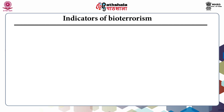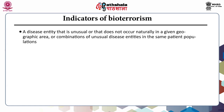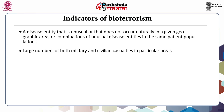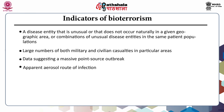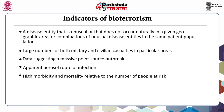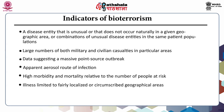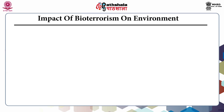Indicators of bioterrorism include: a disease entity that is unusual or does not occur naturally in a given geographic area, or unusual combinations of disease entities in the same patient population; large numbers of both military and civilian casualties in particular areas; data suggesting a massive point-source outbreak; apparent aerosol route of infection; high morbidity and mortality relative to the number of people at risk; illness limited to localized geographic areas; sentinel deaths; and deaths in animals of multiple species.